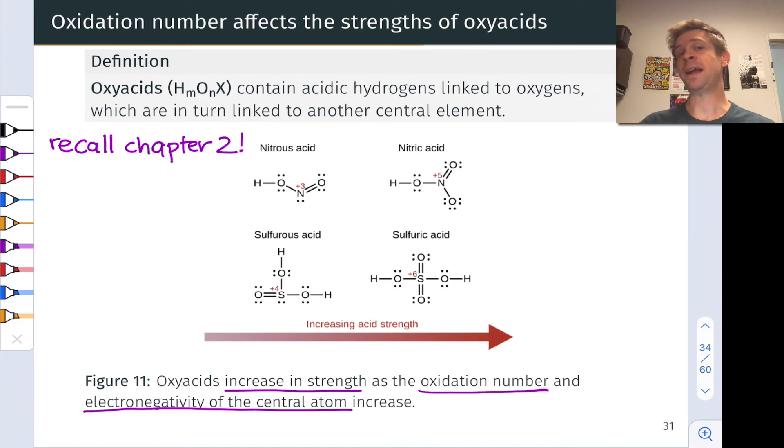This is because the conjugate base, the anion, is more stable. This facilitates a dissociation of the oxyacid into hydronium and the conjugate base, which is typically some polyatomic anion like sulfate or bisulfate, phosphate, etc.